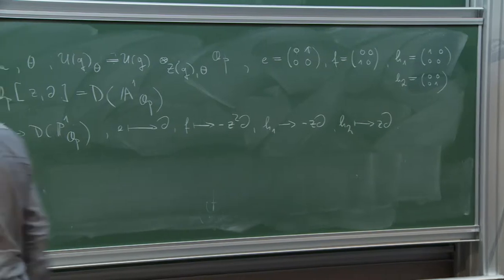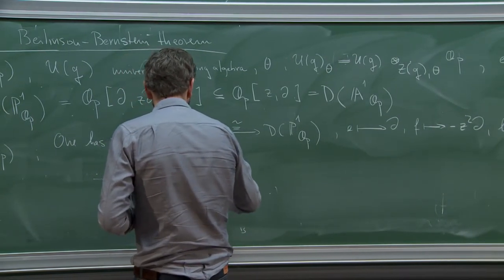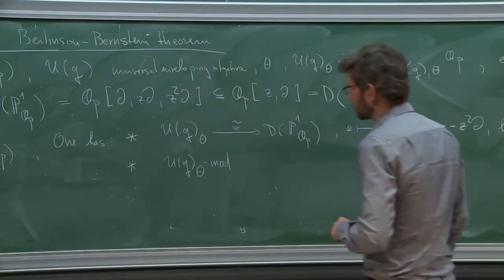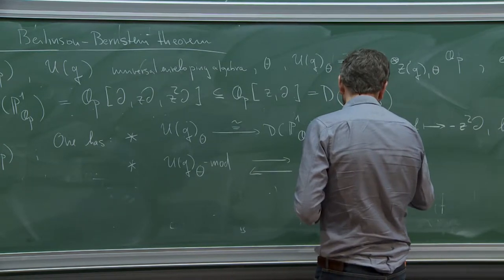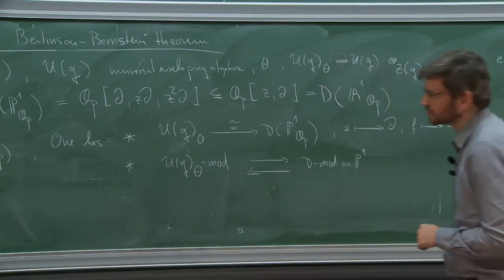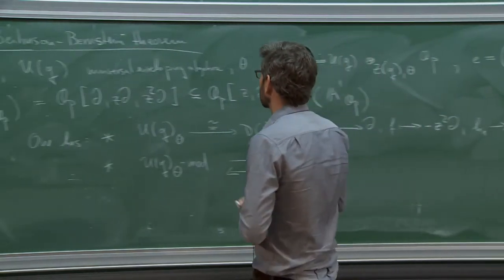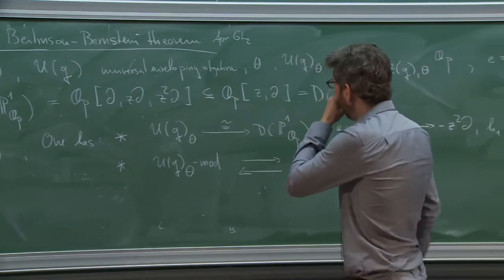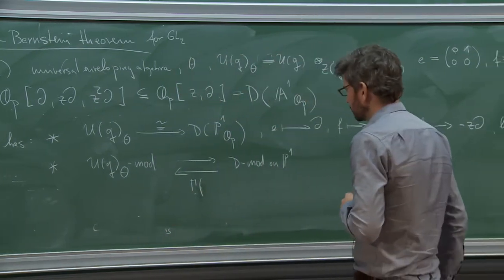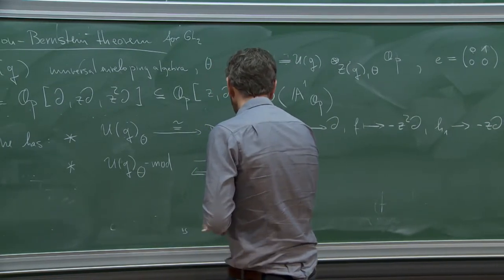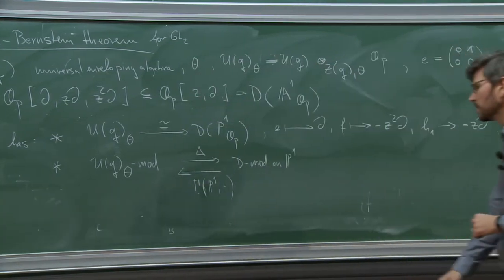This gives a connection between D-modules on P1 and representations of the Lie algebra, which is very tight — one has an equivalence of categories between all modules over this algebra and D-modules on P1. This is not specific to GL2; it can be done for any split reductive group over Q_p. Going in one direction is taking global sections and viewing the global sections of the D-module via this first result as a representation. The other way is the so-called localization functor.